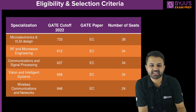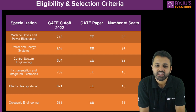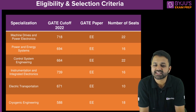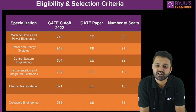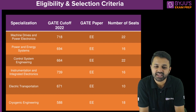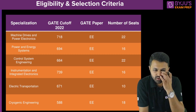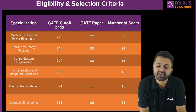For the EE branch, Machine Drives and Power Electronics has a cutoff of 718 with 22 seats. Power and Energy Systems cutoff is 694, Control System Engineering is 664, and Instrumentation and Integrated Electronics has the highest cutoff across all branches at 739.